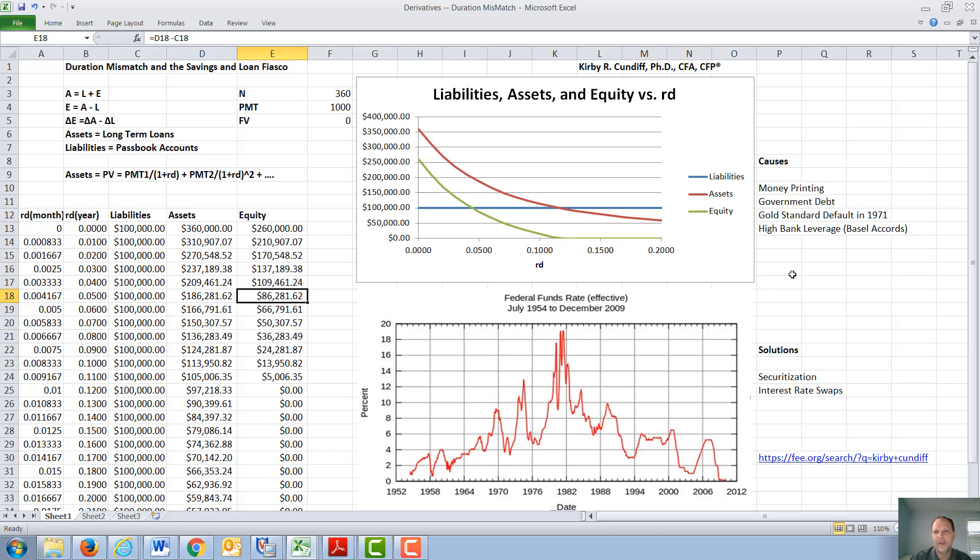So the savings and loan fiasco was caused by too much leverage at the banks, which is allowed under the Basel Accords. Most banks only have 5% to 10% in equity, and then government printing to finance debt, eventually resulting in the default on the gold standard and huge short-term interest rates.